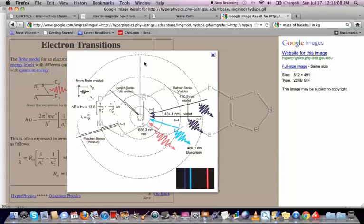The other ones, the n equals 1 or the n equals 3 transitions, and all of these have series names, which I'll talk about in a second, are not part of the visible spectrum, so they're outside the visible spectrum on the electromagnetic spectrum.